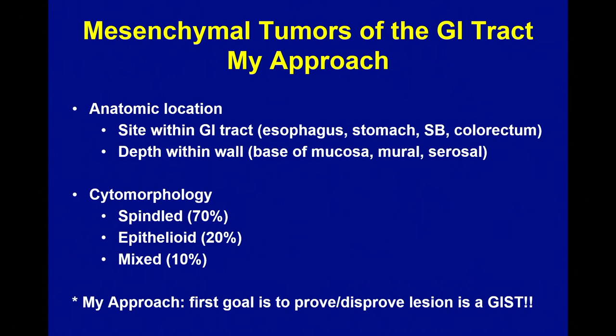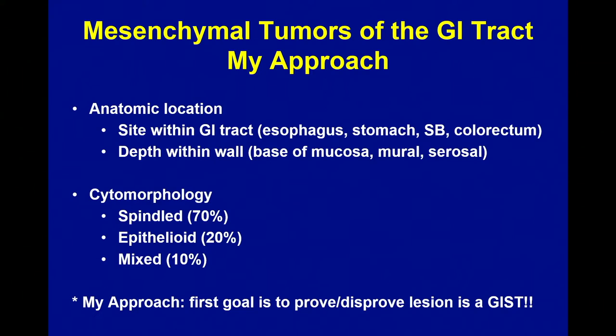My approach — the bottom line — is to prove or disprove any mesenchymal lesion as a GI stromal tumor, for reasons we're going to talk about. Anatomic location does help: some things are common in some locations and very rare in others. What's the site within the GI tract? GI stromal tumors of the appendix are ridiculously rare; they're also exceedingly rare in the esophagus, but pretty common in the stomach and small bowel. Also important is the location within the wall — is it mucosal, mural, or more deep-seated? That can help because some things are more typical to be superficial versus deep.